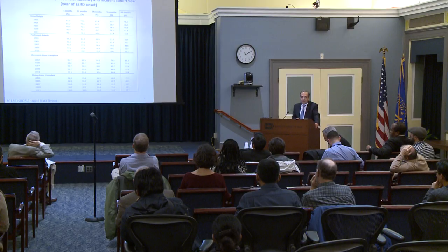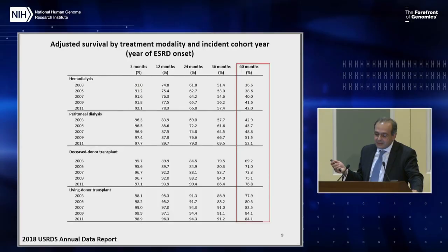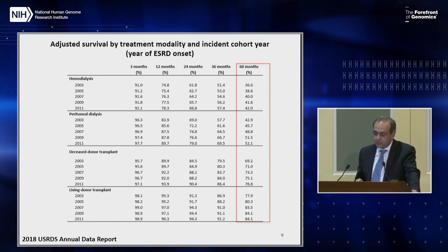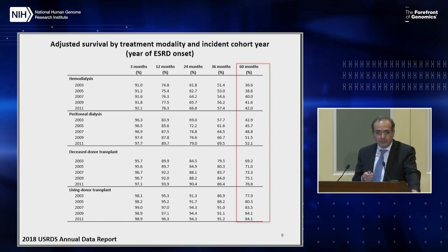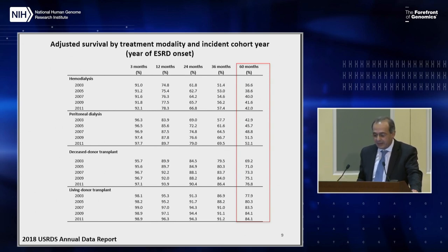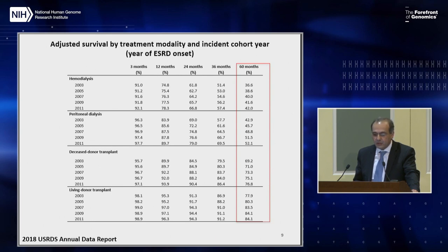Transplantation improves survival significantly — particularly living donor transplantation — though there is some selection bias since patients selected for transplantation tend to be healthier. Definitely transplantation is the preferred path when thinking about improved survival in end-stage kidney failure.